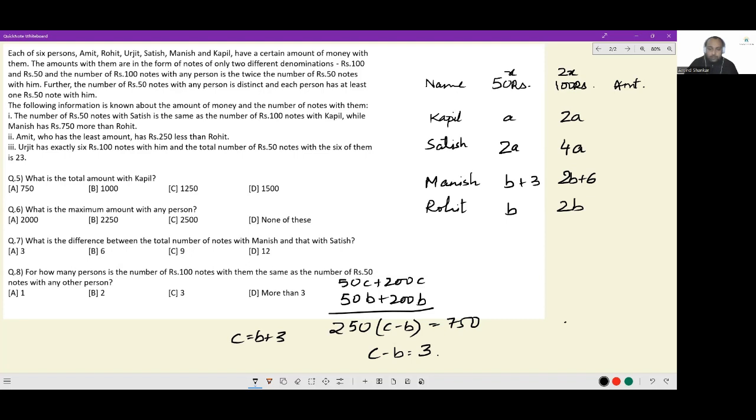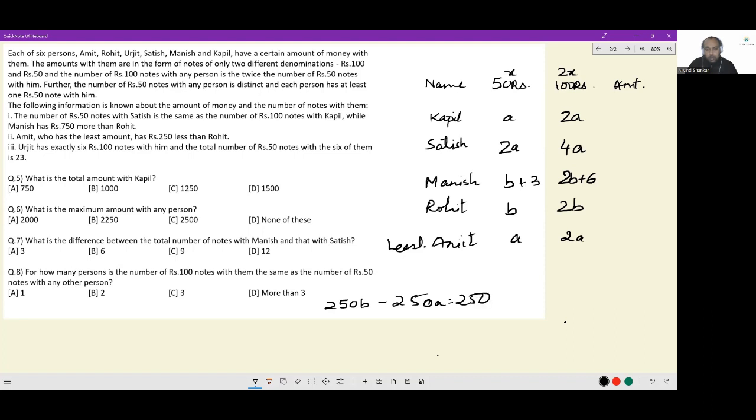Now the next part. First let me get rid of all this working. Next is Amit who has the least amount has 250 less than Rohit. Now the amount with Rohit was clearly identified 250b. Now amount with Amit which is also the least. 250b minus 250a is equal to 250 or b minus a is equal to 1 or b is equal to a plus 1. Given that I have two things in b I don't want to do this. What I want to do is a is equal to b minus 1. So that this a turns to b I still have fewer number of variables to deal with. So this will turn to b minus 1. This will turn to 2b minus 2.